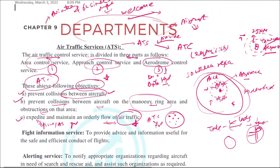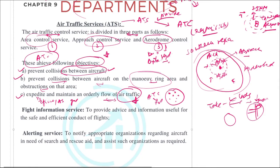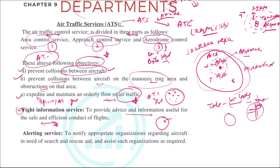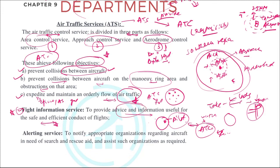Apart from that, there is the flight information service. They have to provide useful information for the safe and efficient conduct of flights. For example, when a flight contacts ATC, the ATC has to provide information like weather conditions and which runway to use. This comes under the category of flight information service — providing advice and information useful for safe and efficient conduct of flights.